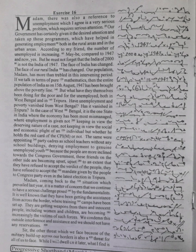The same were appointing party cadres as school teachers without any school buildings, denying employment to genuine unemployed youth because the people are more inclined towards the Congress government. These friends on the other side are becoming upset, upset to an extent that they have refused to accept the verdict of the people. They have refused to accept the mandate given by the people to Congress party even in the latest election in Tripura.